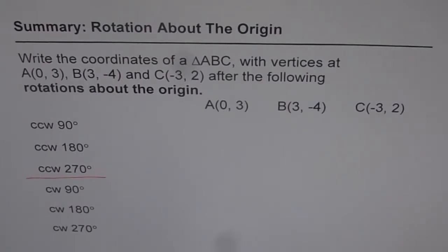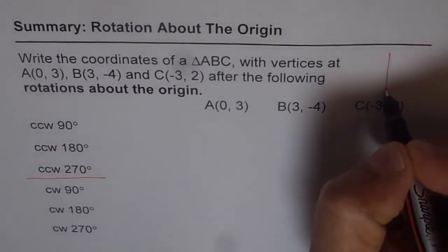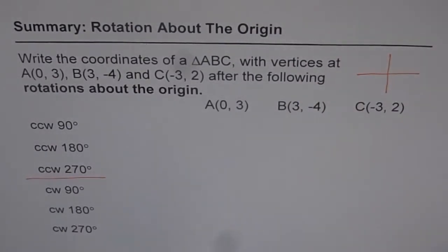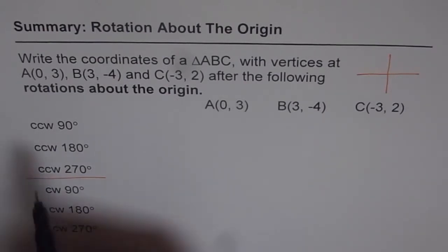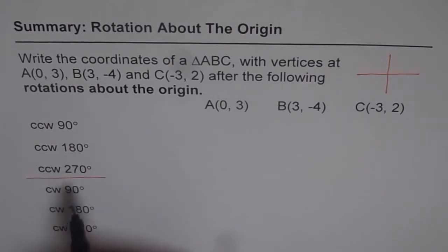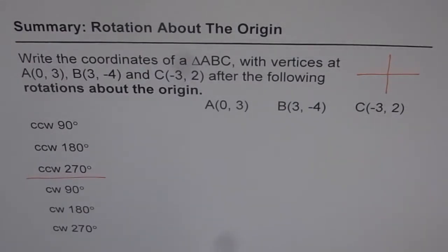Let's first understand how we should do it. This is our coordinate plane. In the first set of three, we are doing counter-clockwise: 90 degrees, 180 degrees, and 270 degrees for the triangle, and the coordinates are already written for you.